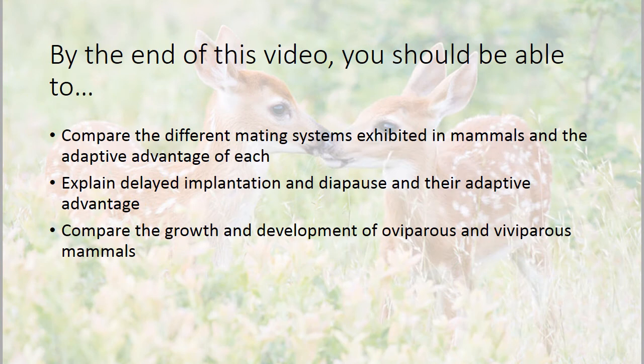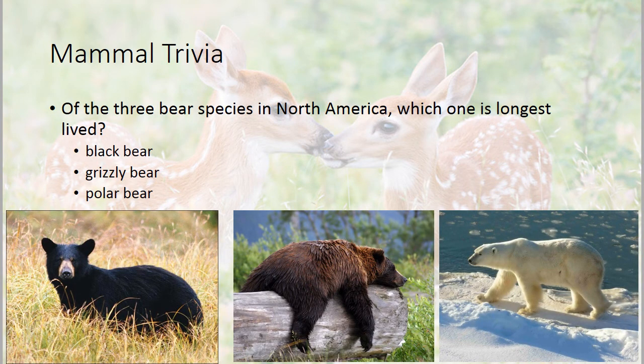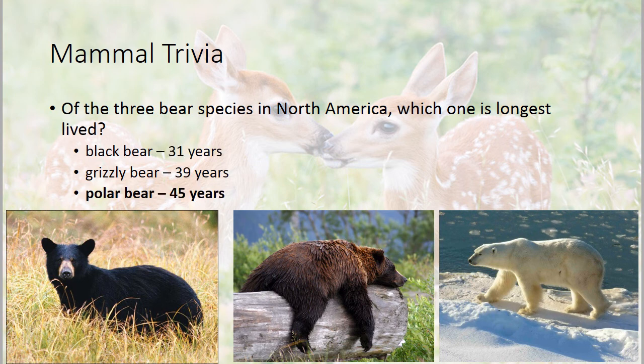Make sure you have good notes on the mating systems, delayed implantation and diapause, and growth and development of different mammals. We'll end with some trivia: there are three bear species in North America — black bear, grizzly bear, and polar bear. Which lives longest? It's the polar bear, which can live 45 years, compared to the black bear at 31 years and the grizzly bear at 39 years.